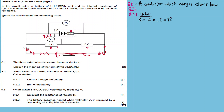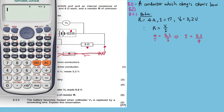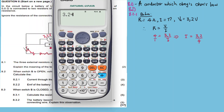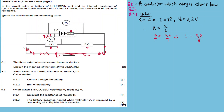We use the voltmeter reading V1 = 3.2V across the 4 ohm resistor. Using Ohm's law, I = V/R = 3.2 / 4 = 0.8 A. So the current flowing through the battery, the 4 ohm, and the 8 ohm resistor is 0.8 A.